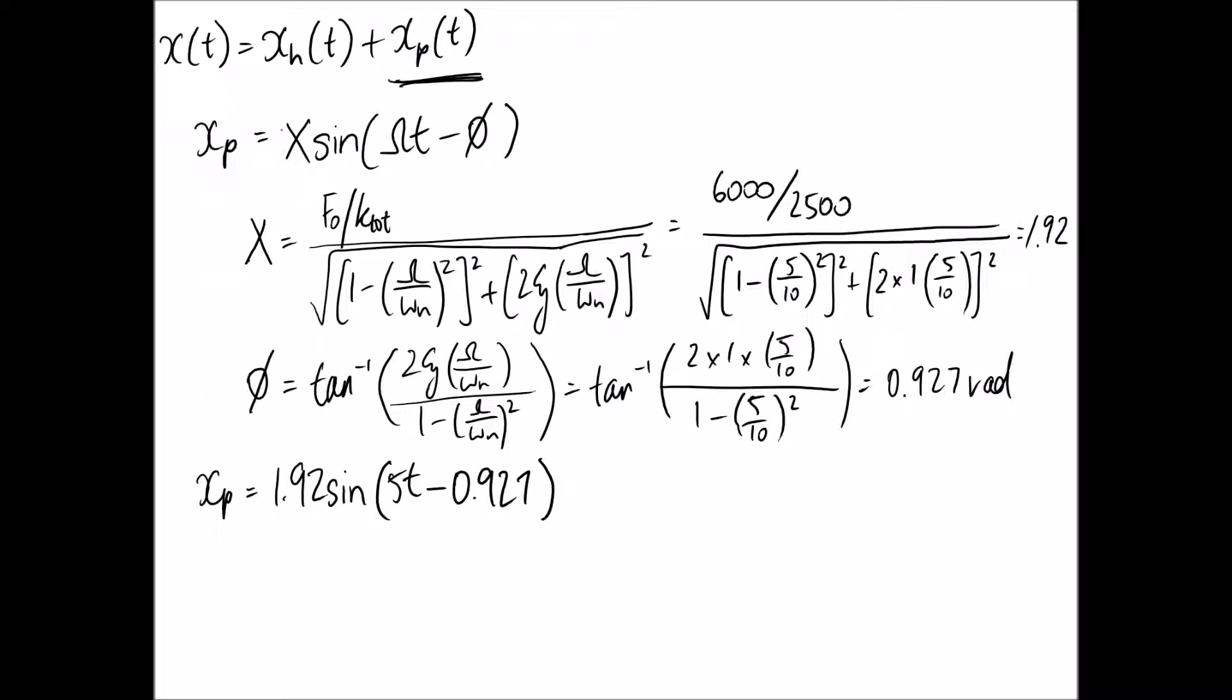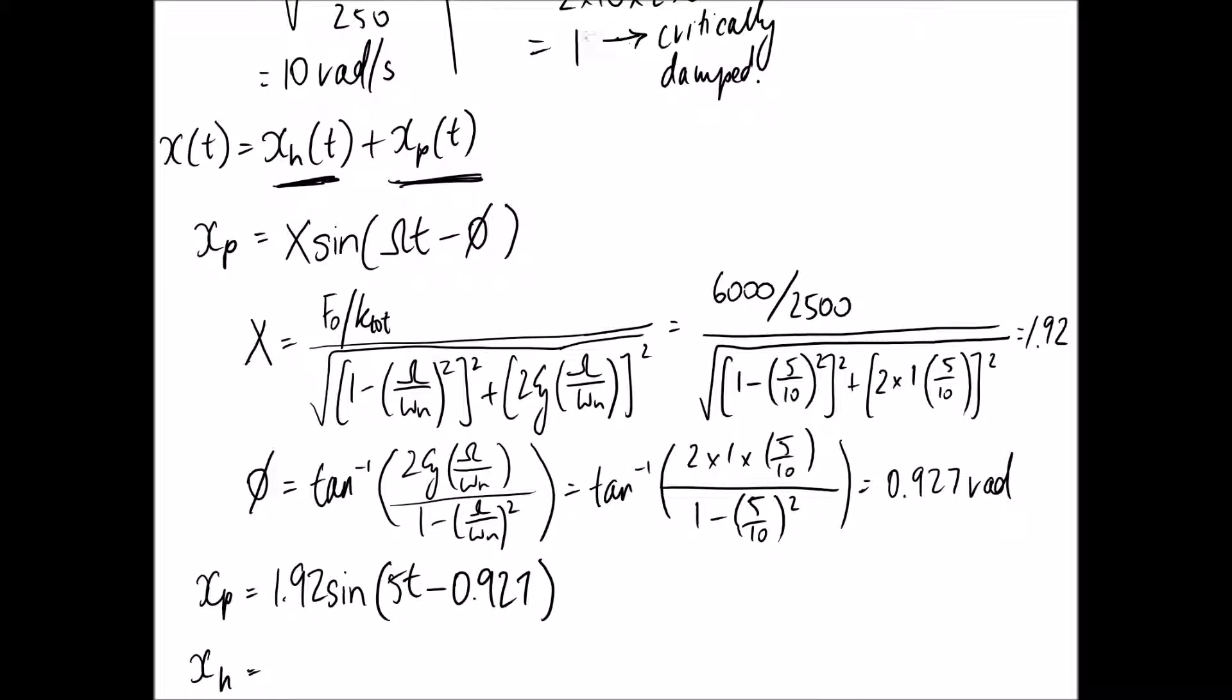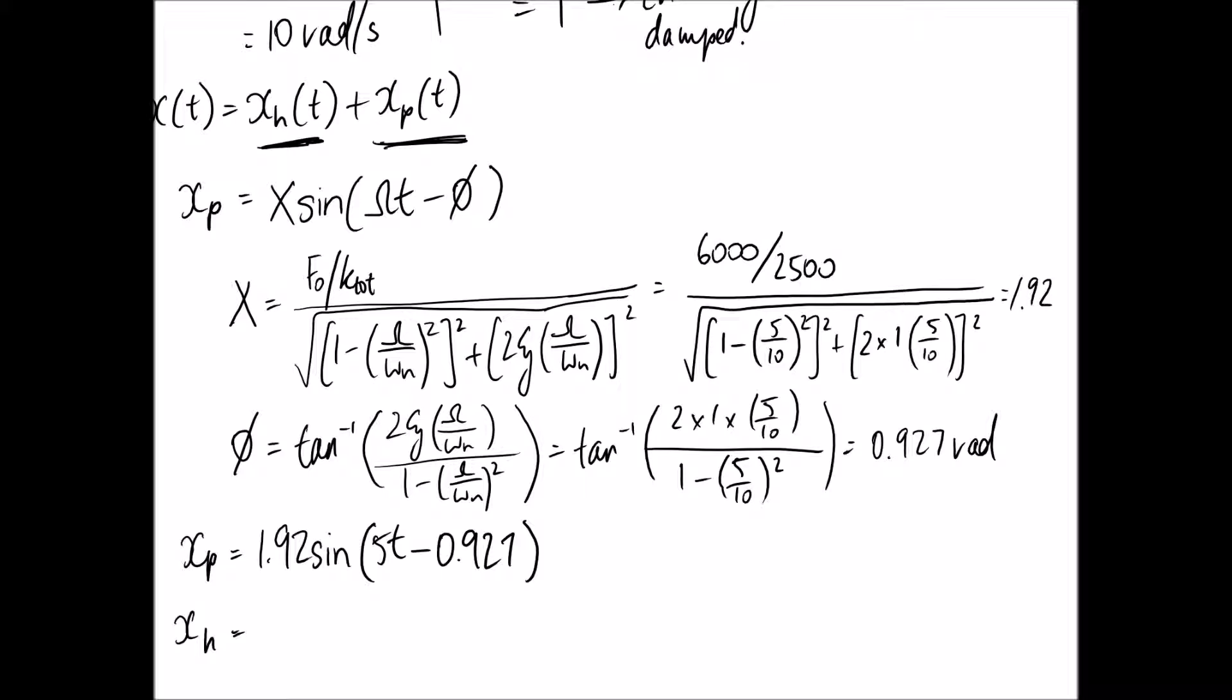Alright, so now we need to go back and look at our homogeneous part of our solution. And this one goes back to the free vibration stuff. We pick our form of our equation based on the damping ratio. So we calculated a damping ratio of 1, which was a critically damped system. So now we just need to copy down the form of that type of motion.